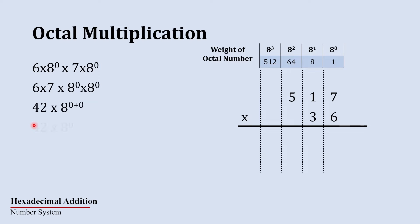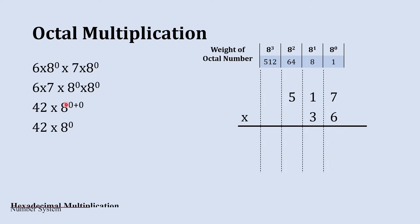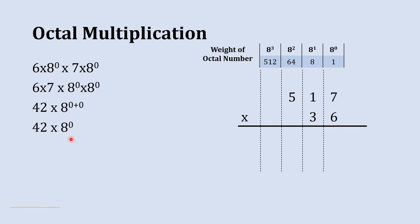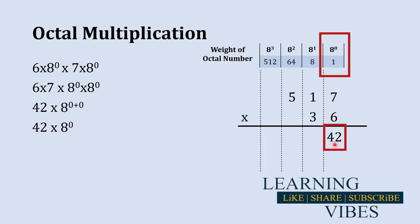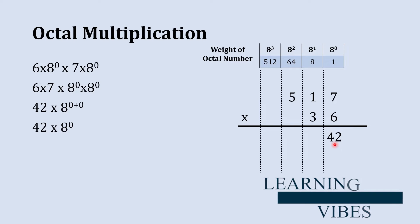Their multiplication gives us 42 — 6 sevens are 42 — and the multiplication of their weightage is 8 raise to 0. The importance of this weightage is that we are going to write this answer in the 8 raise to 0's place. But if we write this 42 here directly, it would not be correct.